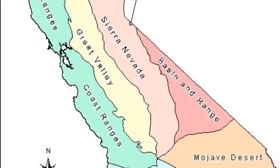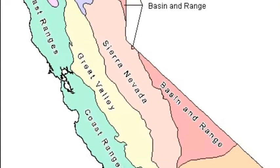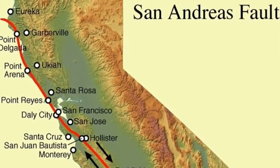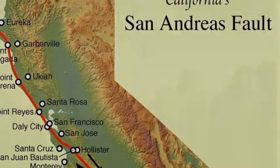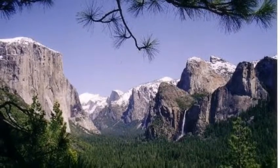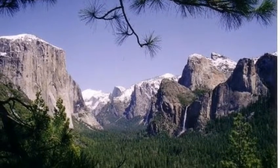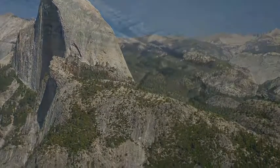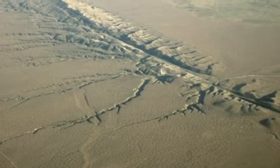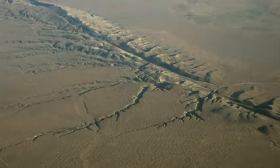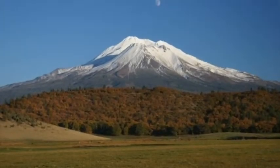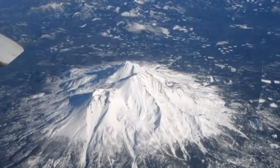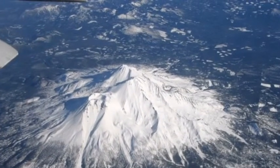For the final part of the unit, students will complete a group project in which each group focuses on one of the geomorphic provinces of California. Each group will give a presentation highlighting their geomorphic province. California is full of fascinating geologic features due to a range of different processes at work under the Earth's surface. Students, at the end of this unit, will have an understanding of the geology at work in their home state of California.